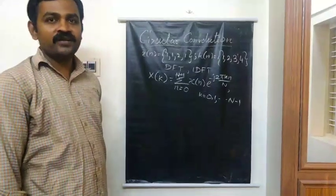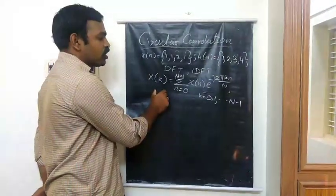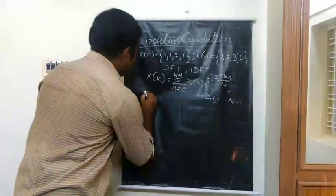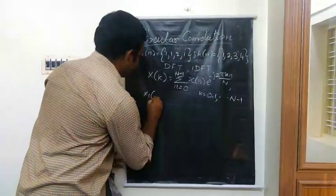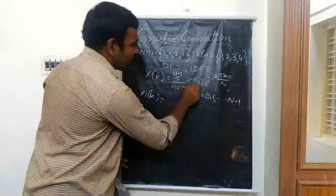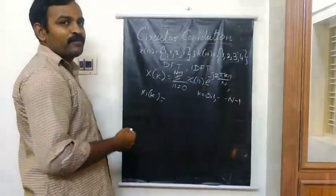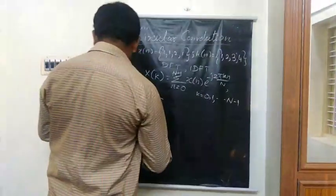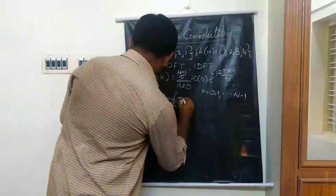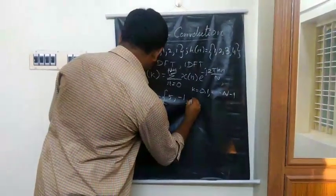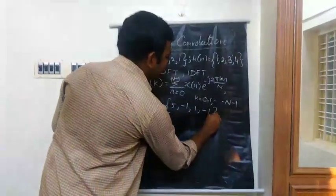So we are calculating for X1 of k. After simplification, you will get X1 of k equals 5, minus 1, 1, minus 1.